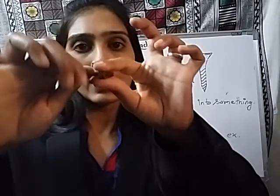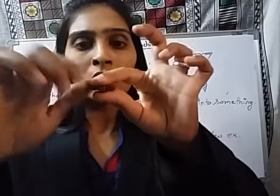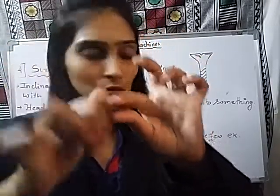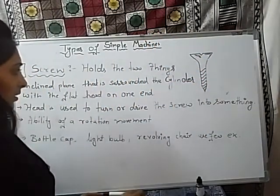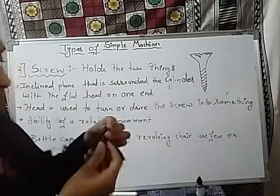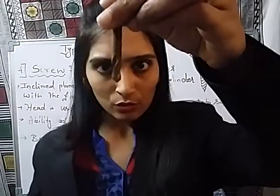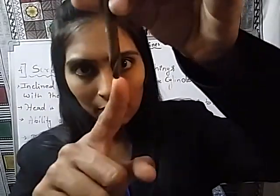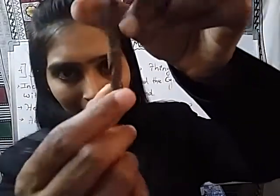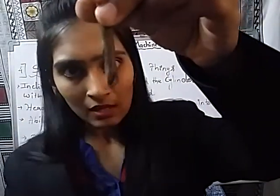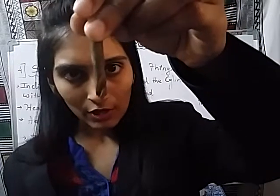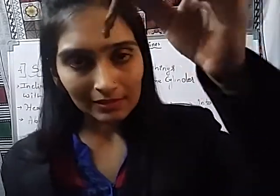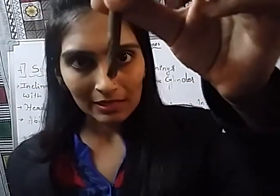This is another example of the screw. You can see these inclined planes in a cylindrical structure. This is basically a drilling machine.